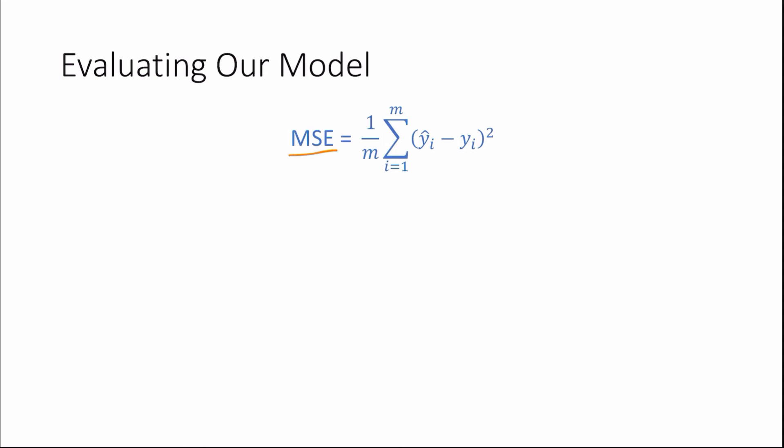But with the cost function, we had 1 over 2m, and with mean squared error, we just have 1 over m, where m is the number of training examples. This formally acts exactly as the cost function, calculating the average distance our data points are away from our model.